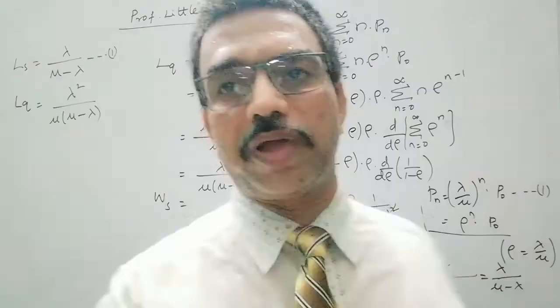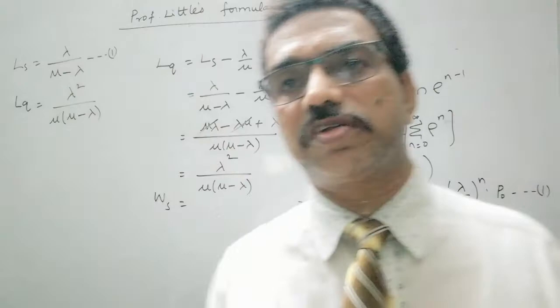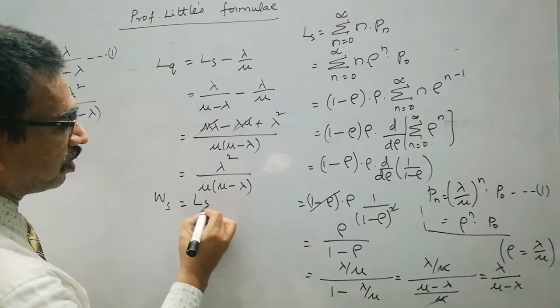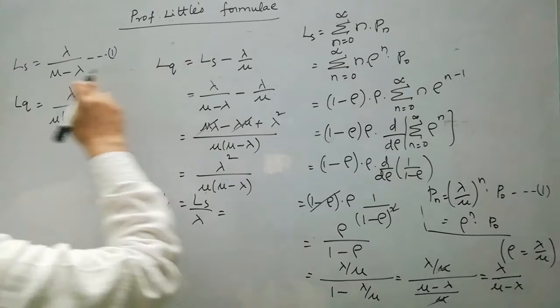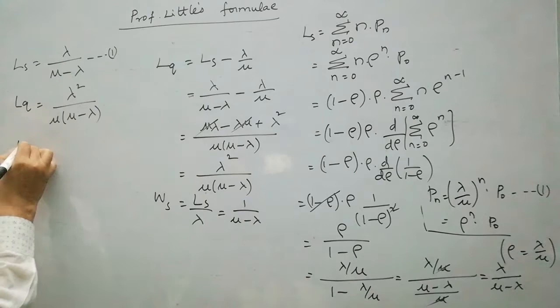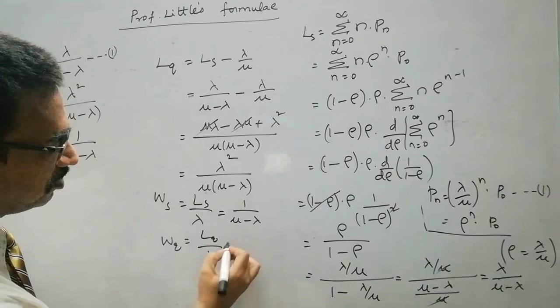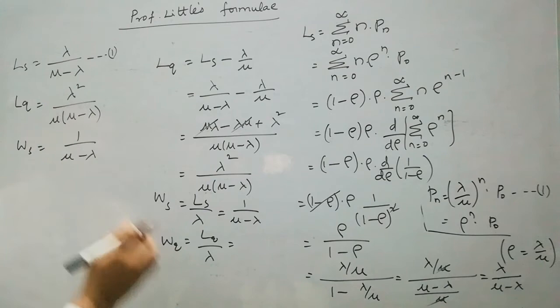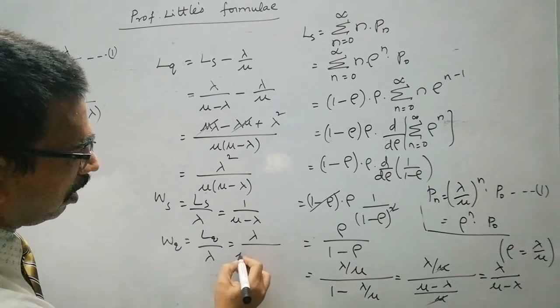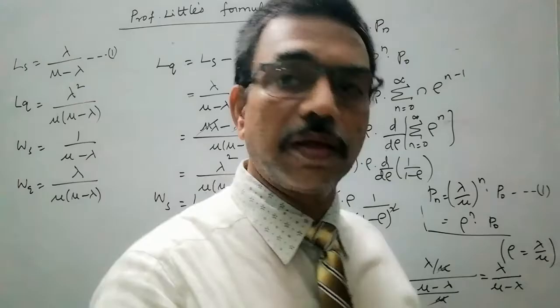Similarly, the expected time spent by a customer in the system, denoted Ws, equals Ls/λ. Since Ls = λ/(μ - λ), we get Ws = 1/(μ - λ). And Wq, the waiting time of a customer in the queue, equals Lq/λ. Since Lq = λ²/[μ(μ - λ)], we get Wq = λ/[μ(μ - λ)].